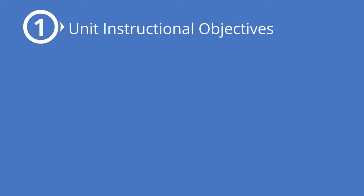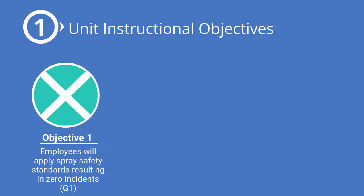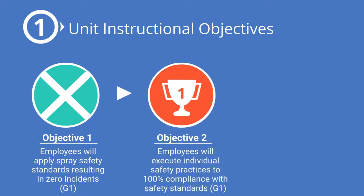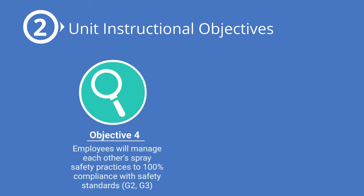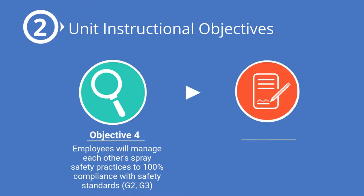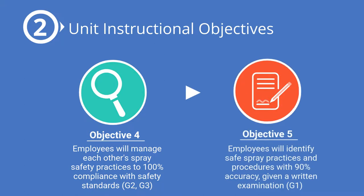There are five unit instructional objectives that align with the overarching curriculum. Under each objective is a series of letters and numbers depicting the connection with each instructional objective to the instructional goals. The first objective is that employees will apply spray safety standards resulting in zero incidents. The second objective is that employees will execute individual safety practices to 100% compliance with safety standards. The third objective is that employees will apply spray safety standards to zero citations. The fourth objective is that employees will manage each other's spray safety practices to 100% compliance with safety standards. And the fifth objective is that employees will identify safe spray practices and procedures with 90% accuracy given a written examination.